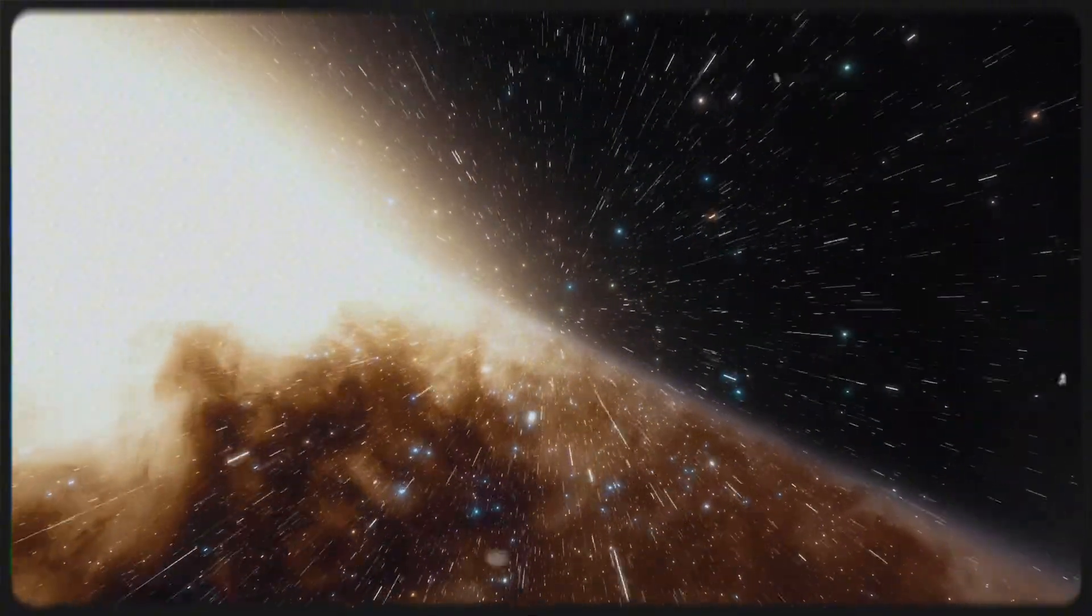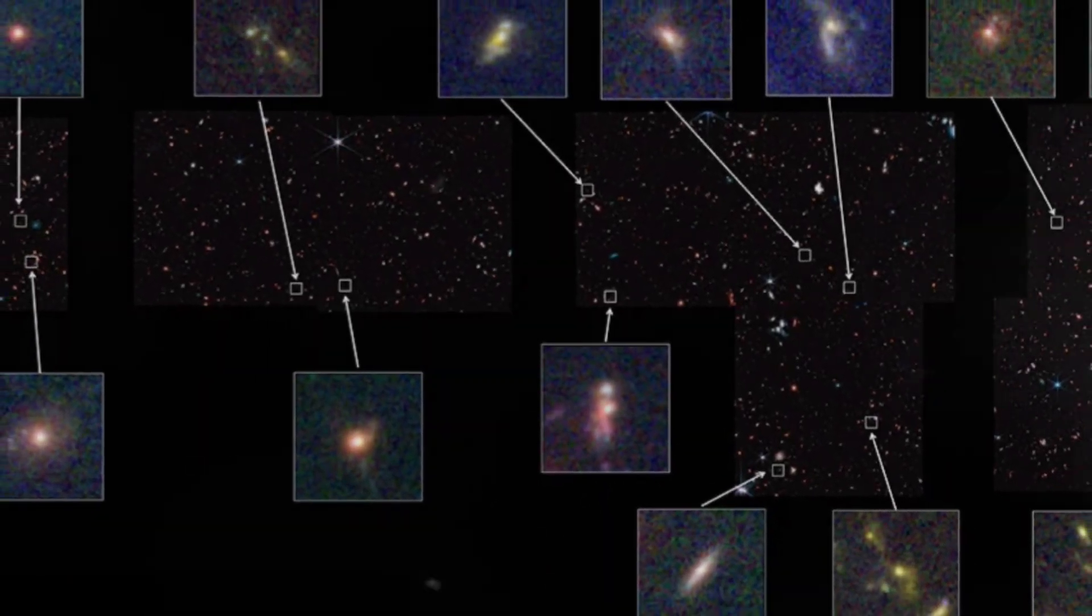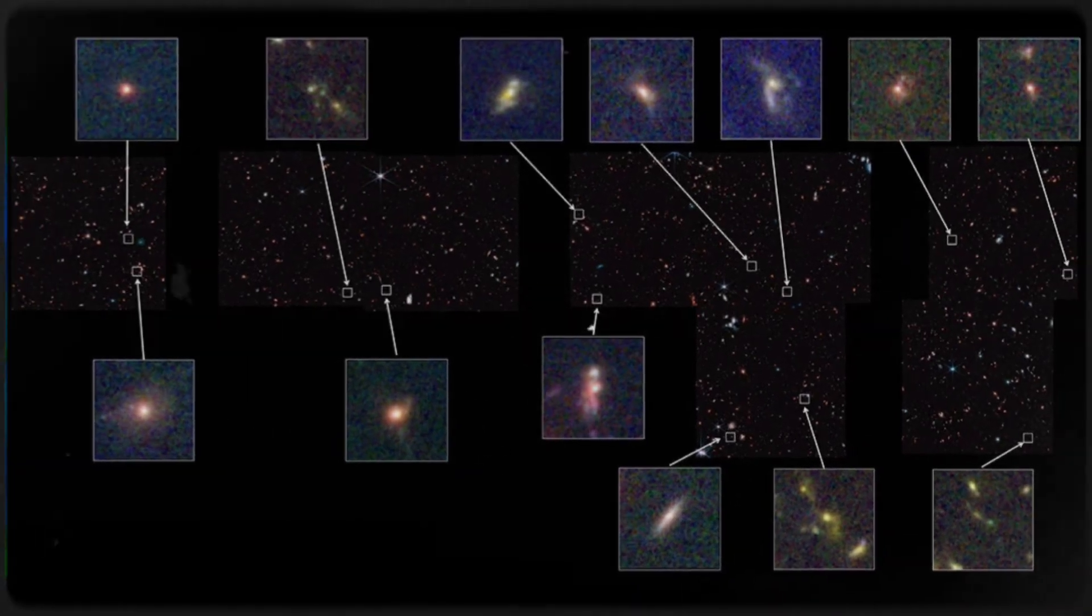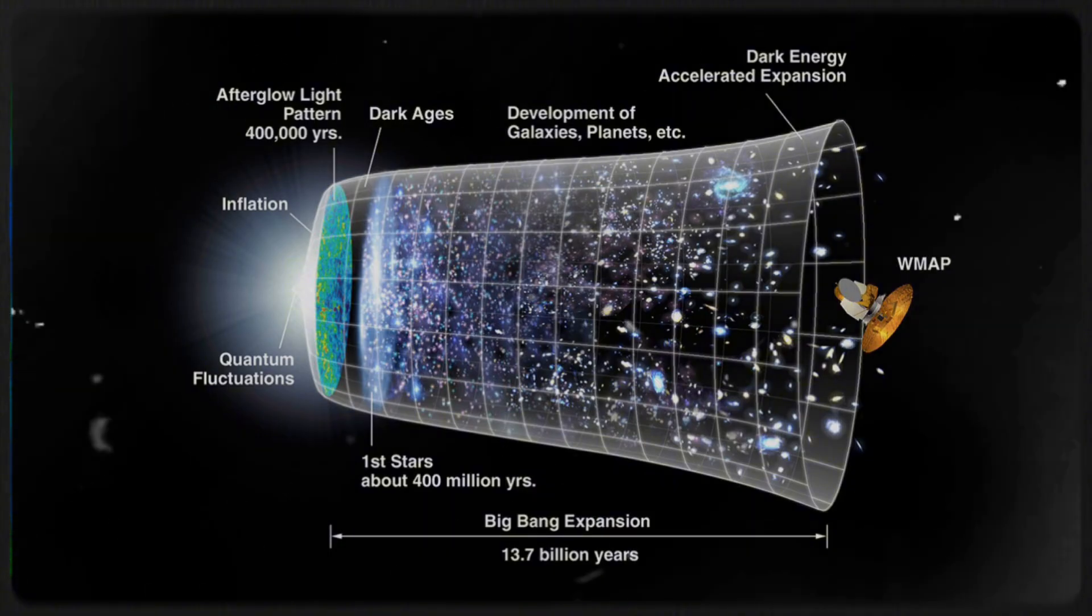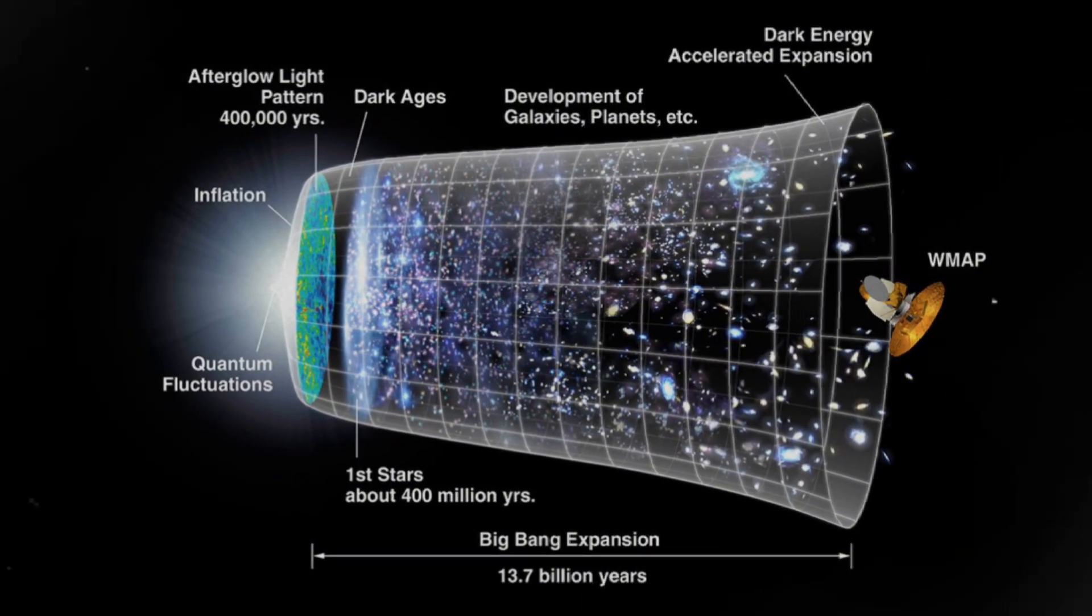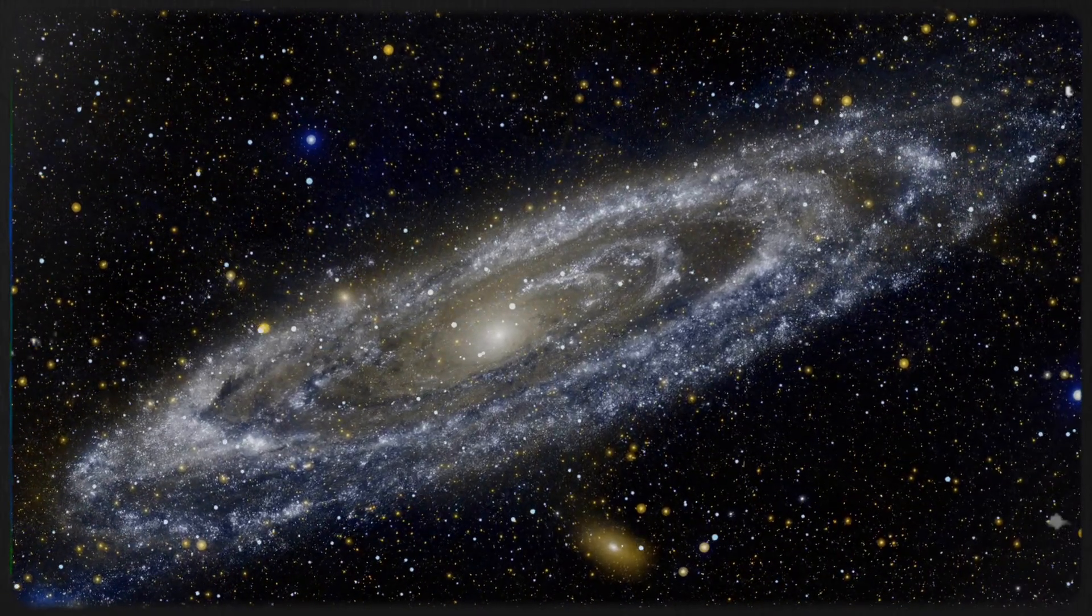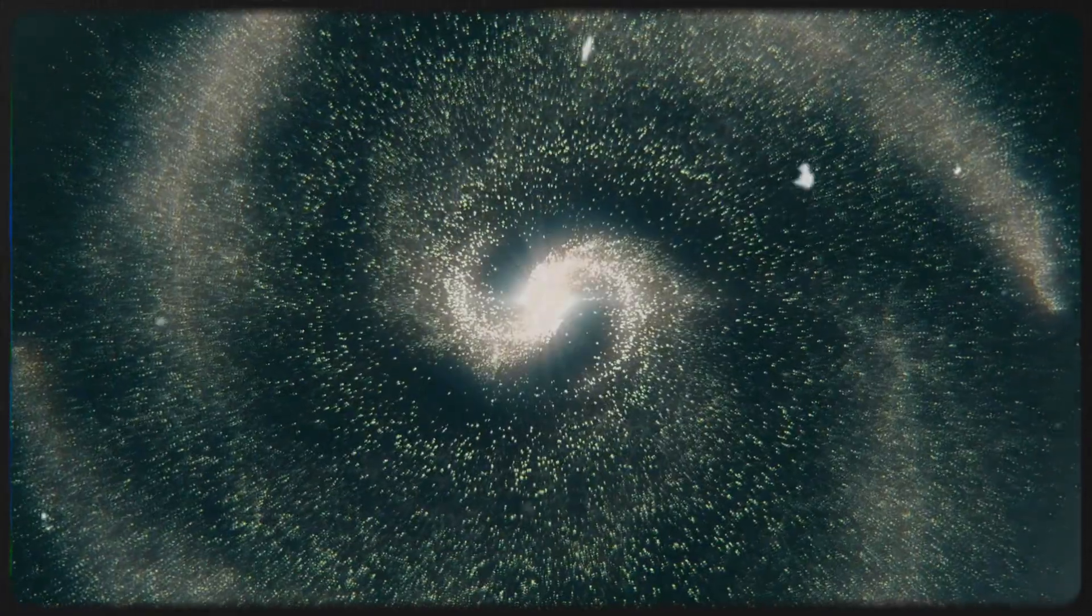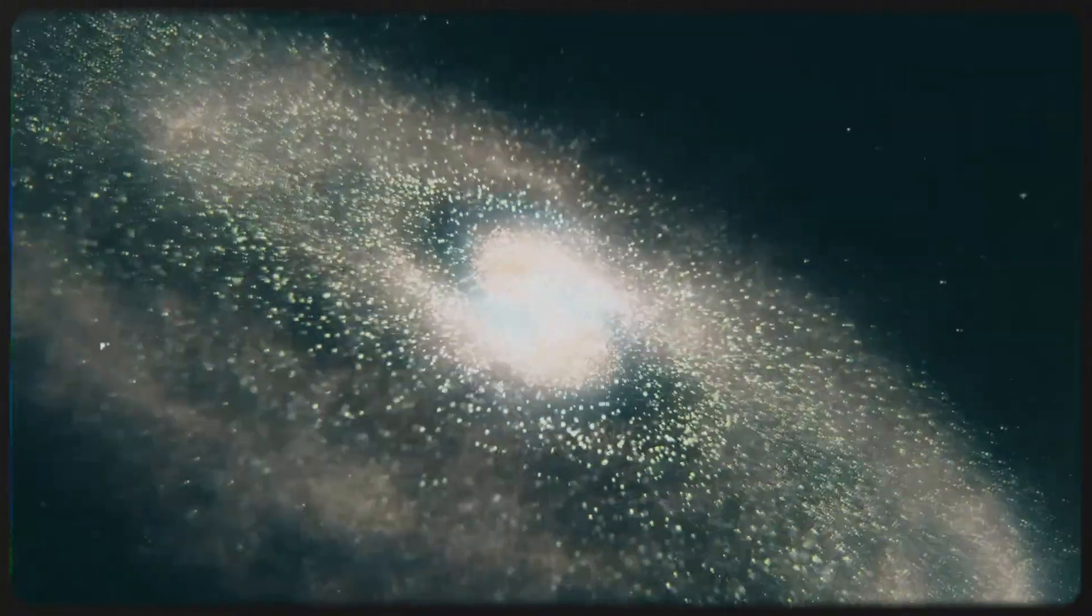The surprises keep coming. While the discovery of high-redshift galaxies has already shaken up our understanding of the cosmos, Webb has now revealed something even more astonishing about the early universe. According to the standard cosmological model, the first galaxies should have been small, simple, and relatively unstructured. But Webb's latest findings tell a different story. Some of these ancient galaxies are not only massive, but also highly organized, similar in complexity to our own Milky Way. This directly contradicts what scientists expected about how stars and galaxies formed in the universe's early days.